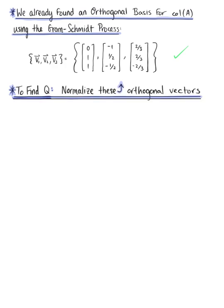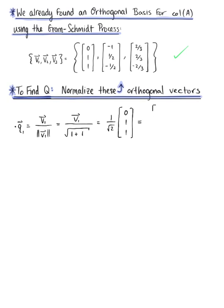So we have our first vector, Q sub 1. To obtain Q sub 1, we normalize vector V sub 1. We have V sub 1 divided by the magnitude of V sub 1, which is the square root of 1 plus 1. This leaves us with the scalar 1 over the square root of 2, multiplied by the vector with components 0, 1, 1. Distributing gives us the vector with components 0, 1 over √2, 1 over √2.